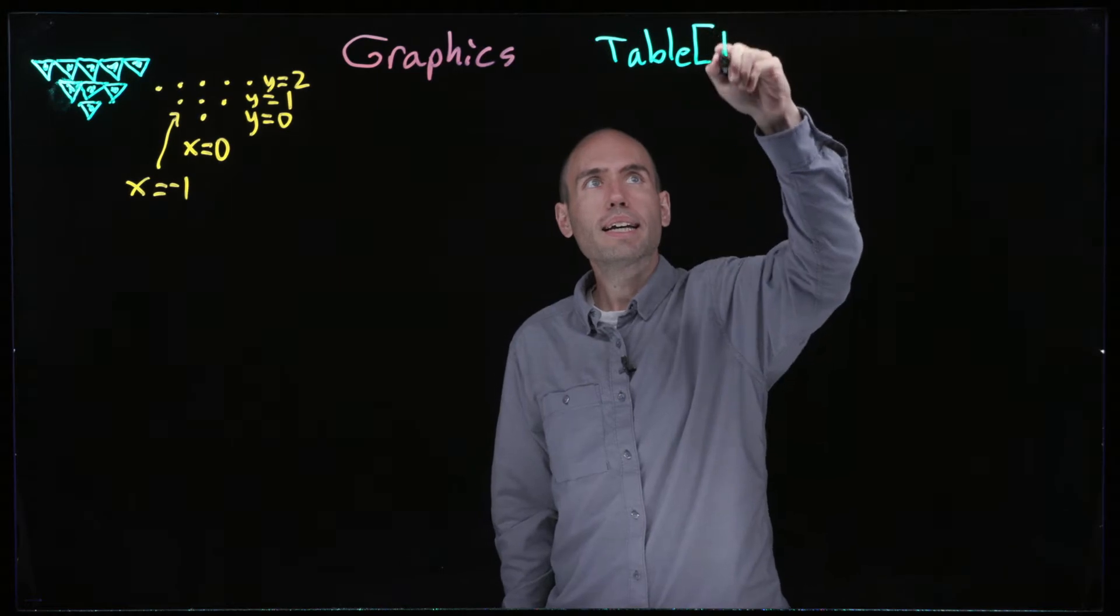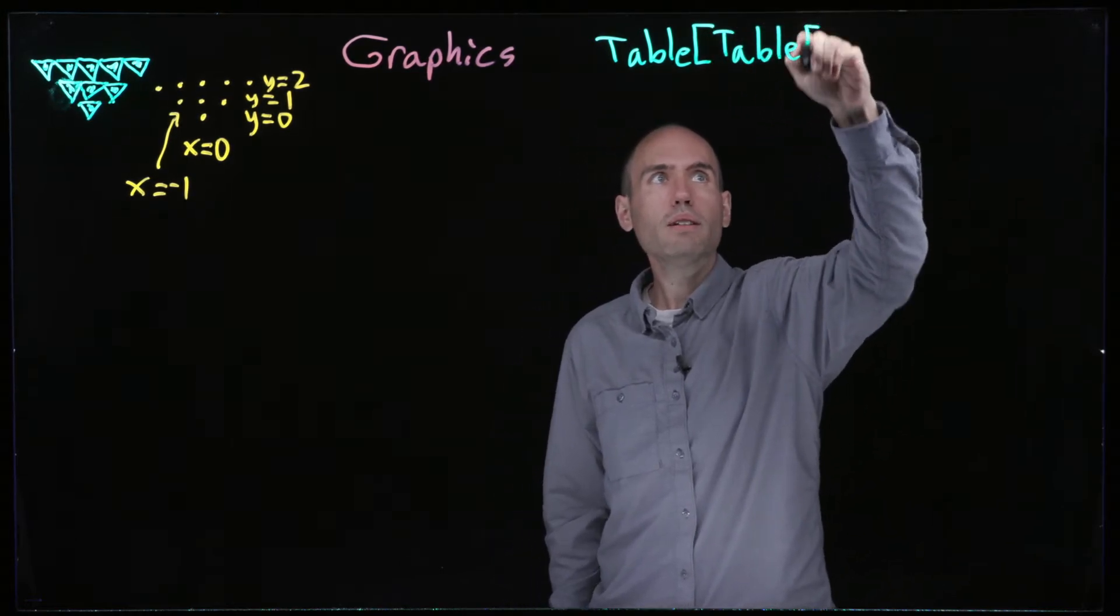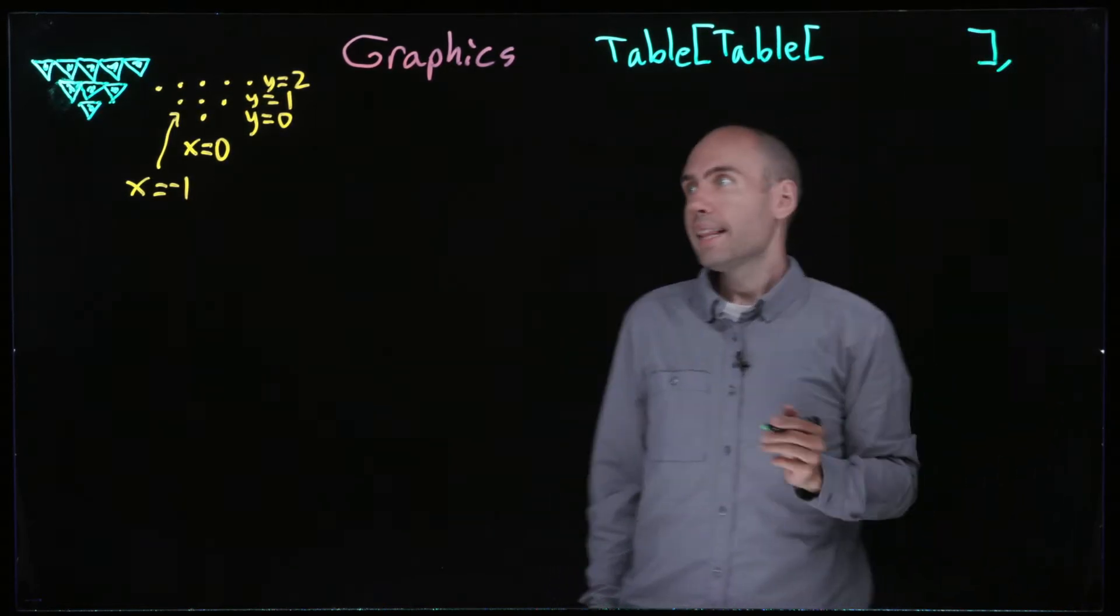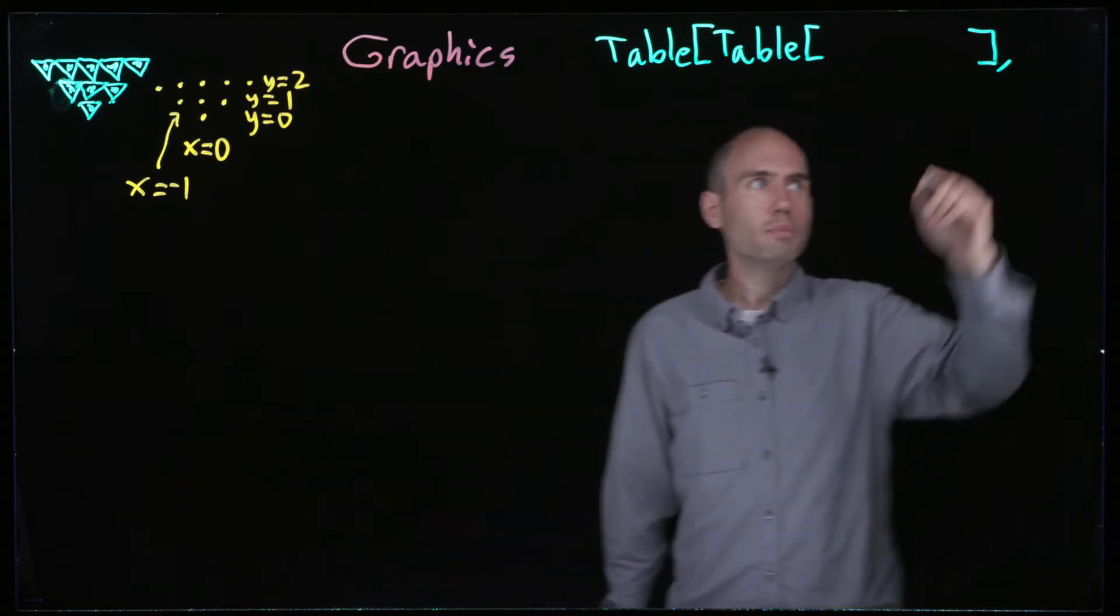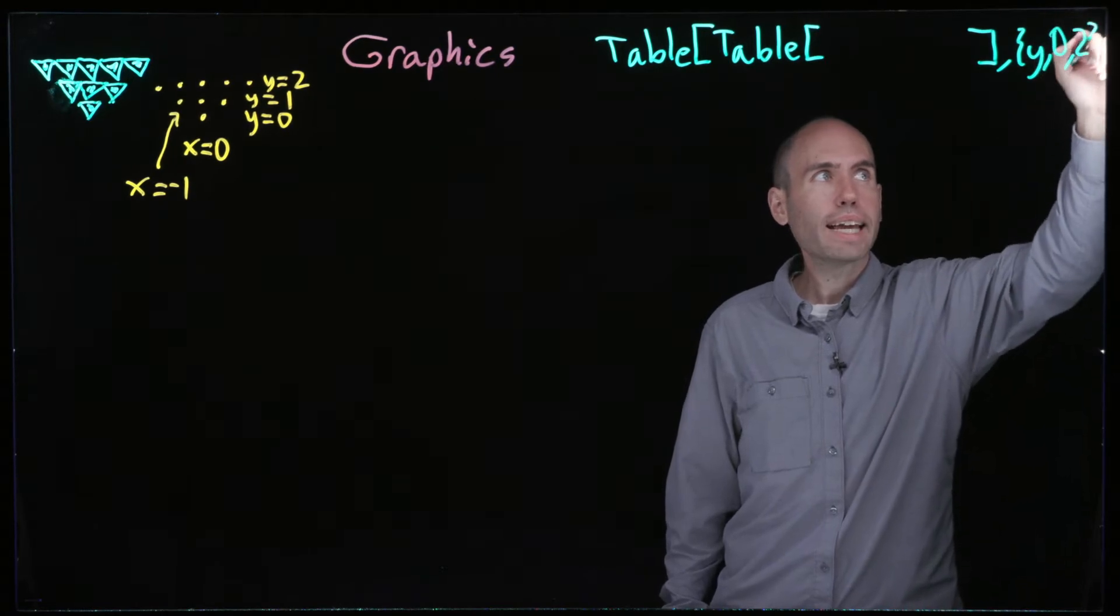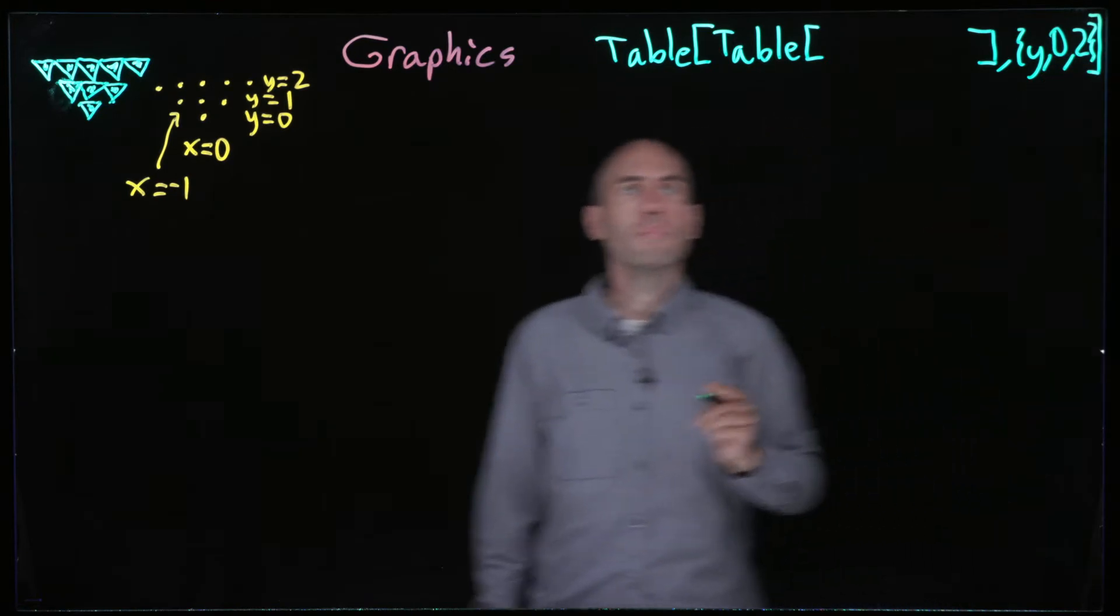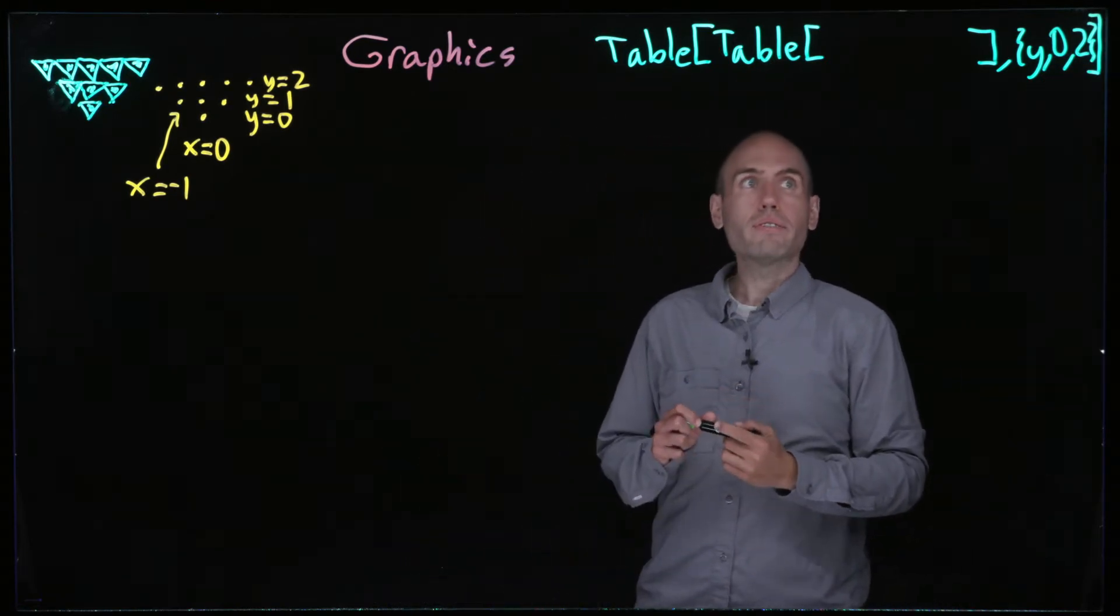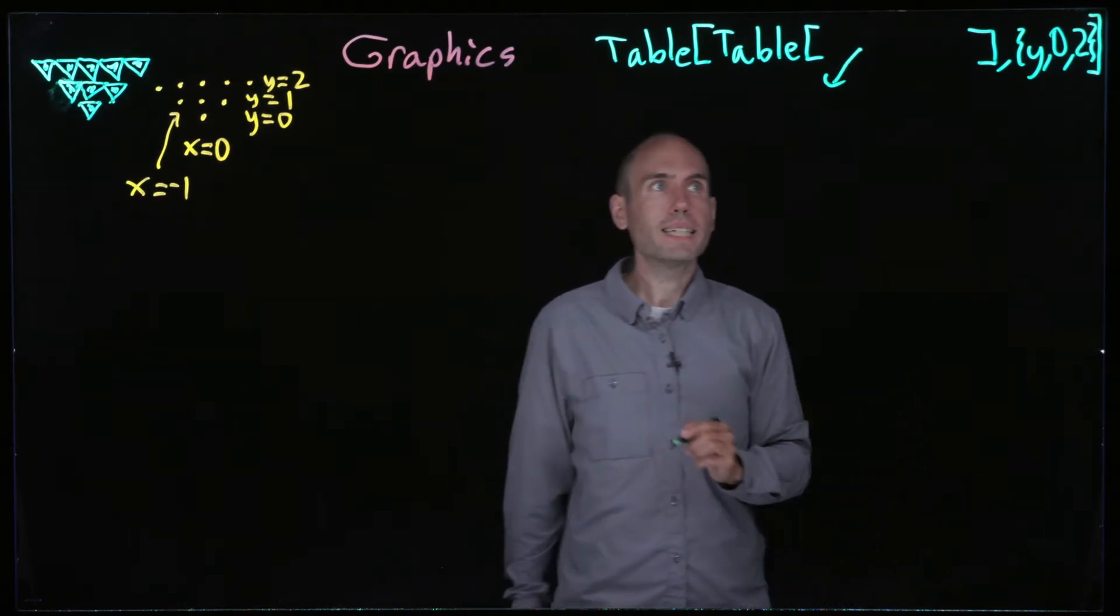We're going to do table, table. For the outer one, let's do y from zero to two, so y starts at zero and goes up to two. It automatically increments by one. Then for this inner part here, I have to think about it a little more.